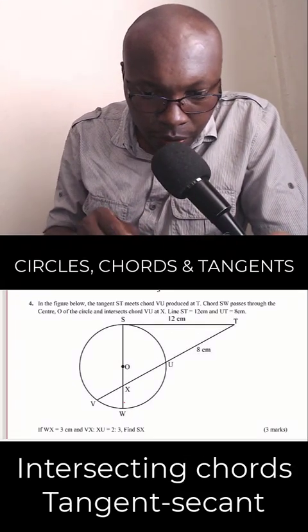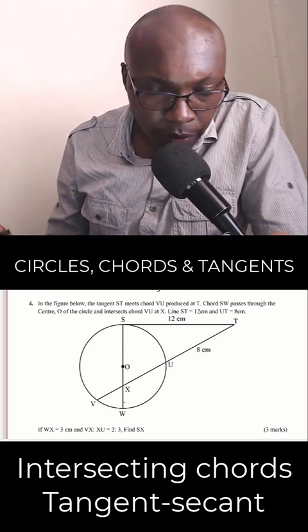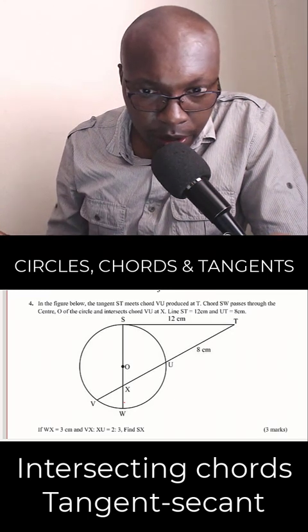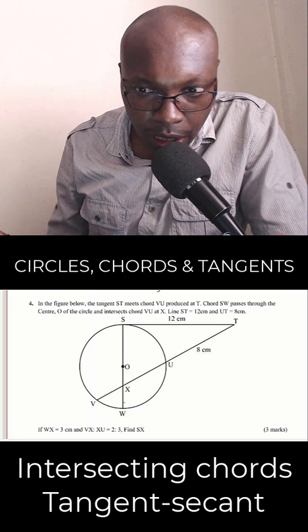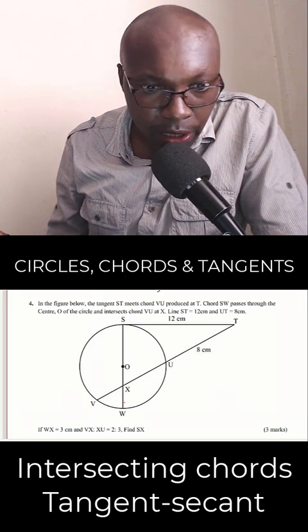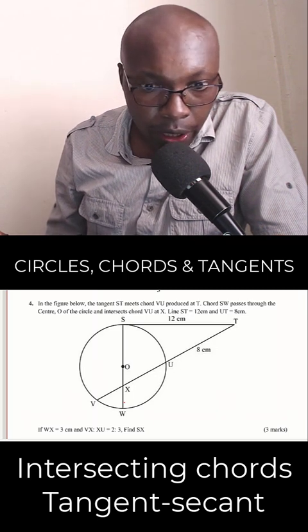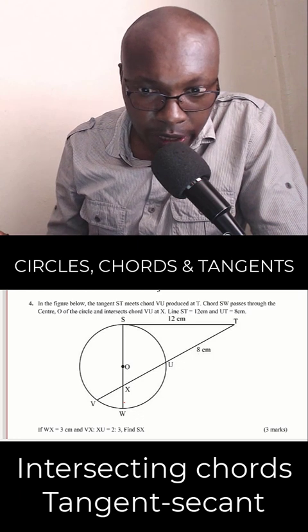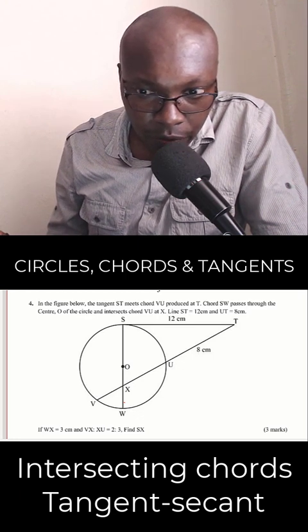Welcome, let's solve this question on circles, chords and tangents. In the figure below, the tangent ST meets chord VU produced at T, chord SW passes through the center O of the circle and intersects chord VU at X. Line ST equals 12 cm and UT equals 8 cm.